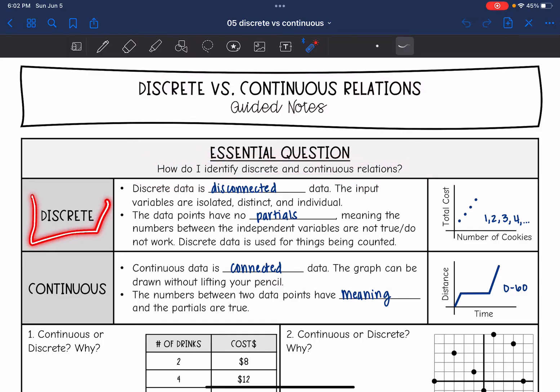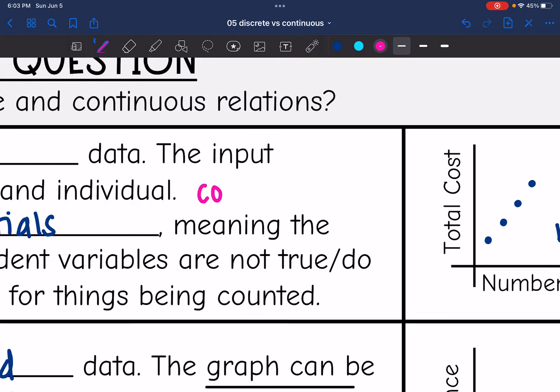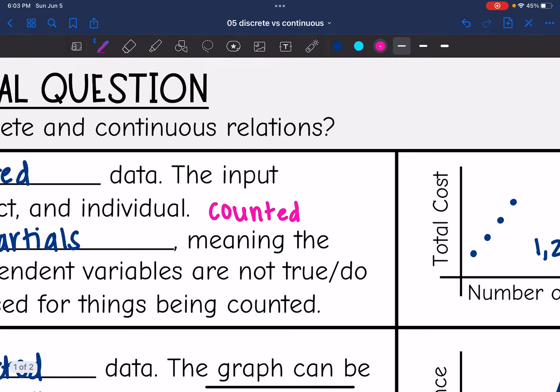So let's start with discrete. Discrete data is disconnected data. The input variables are isolated, distinct, and individual. Another way I like to describe it is they can be counted. Every part of it can be counted.